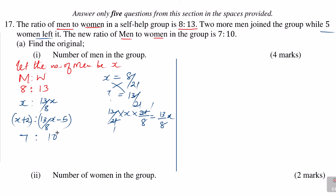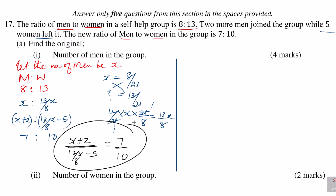This means that if I take x plus 2 divided by 13 over 8 x minus 5 — that is the ratio of new men to new women — it should equal 7 to 10, which I write as 7 divided by 10. This equation is what will help us find x, and once we get x we can find everything else including the number of women and answer the other questions.